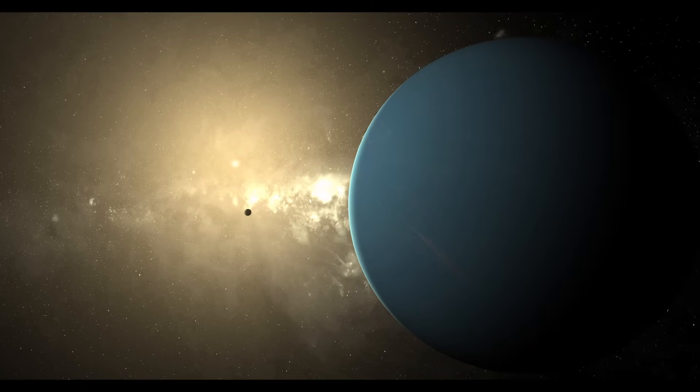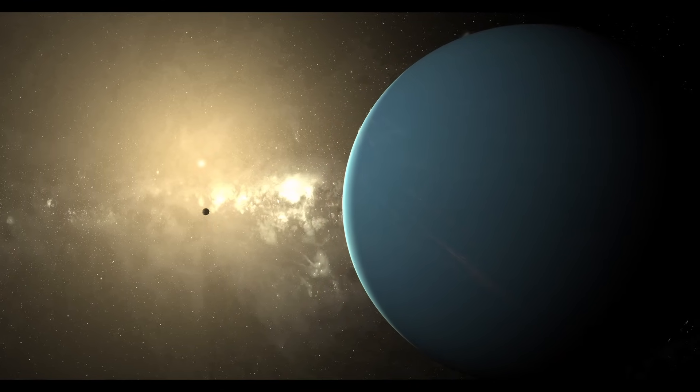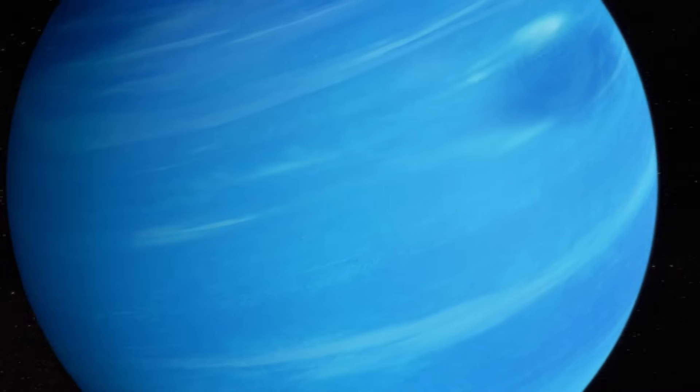This unique composition is the key to their bizarre nature, and these frigid worlds are anything but quiet. On Neptune, the winds are the fastest in the solar system, but its colossal storms hide a strange secret about how shallow they really are.